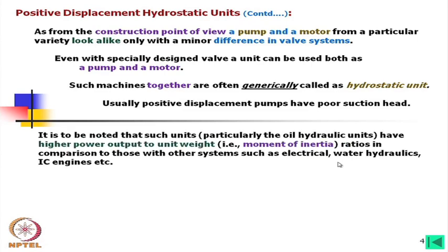Oil hydraulic hydrostatic units have higher power output to unit weight. Specifically, the ratio of torque output to moment of inertia is high in comparison to other systems such as electrical, water hydraulics, and IC engines.